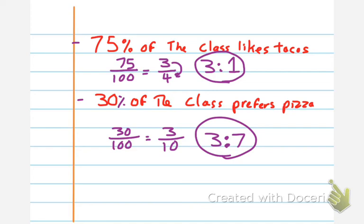So as you can see, we can go and take a part to part and make it into a part to whole. And we can take a part to whole and make it into a part to part ratio.